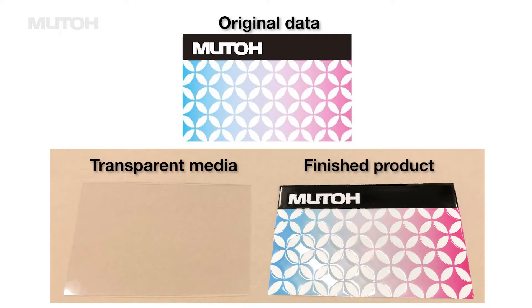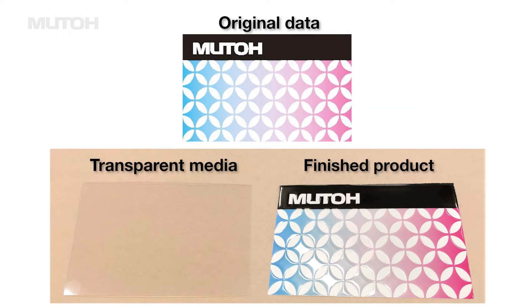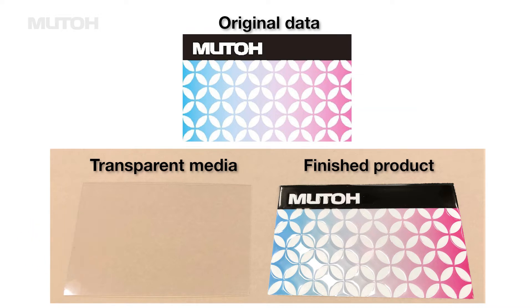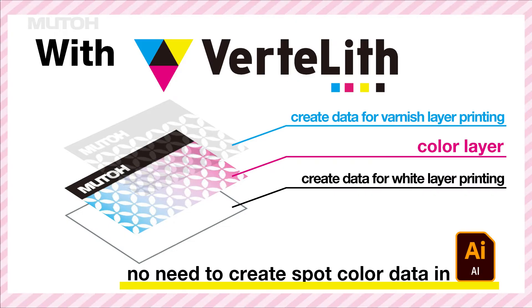This time, we use this data to print three layers of white, color, and varnish on a transparent media like this. Normally, white and varnish spot color data must be created in advance, but the Vertlith RIP software's functionality enables multi-layer printing without the spot color data.